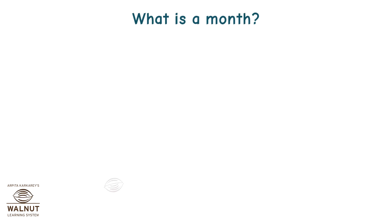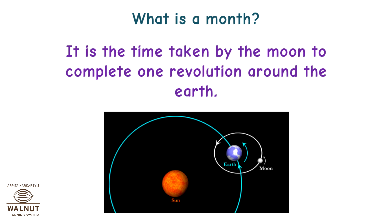What is a month? It is the time taken by the moon to complete one revolution around the earth.